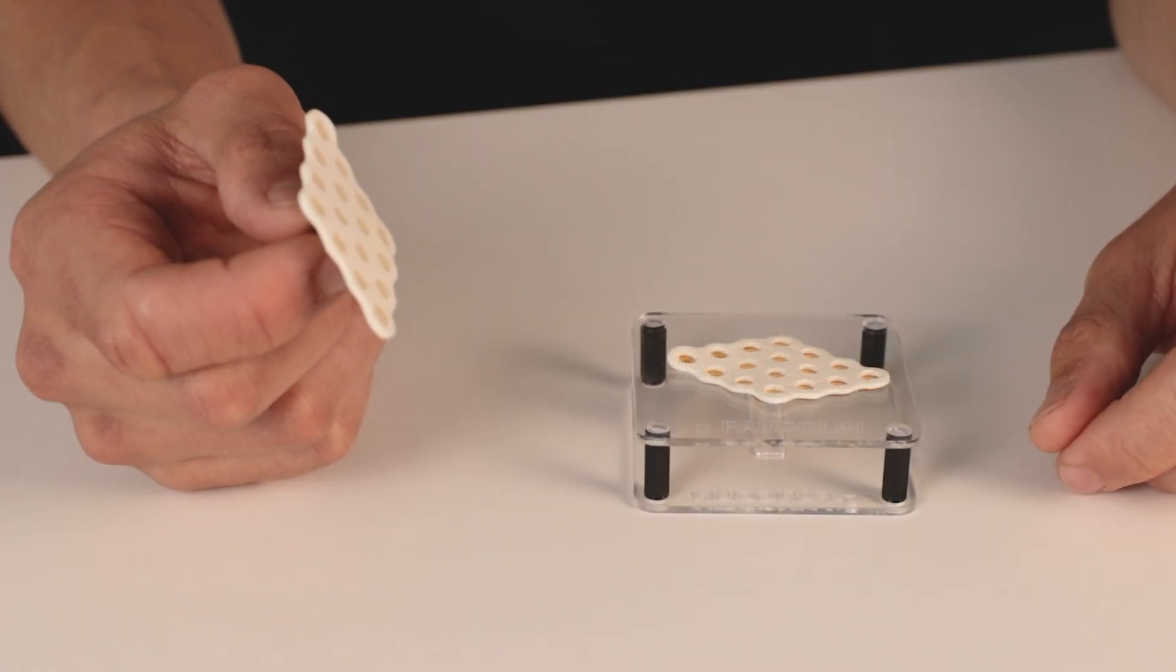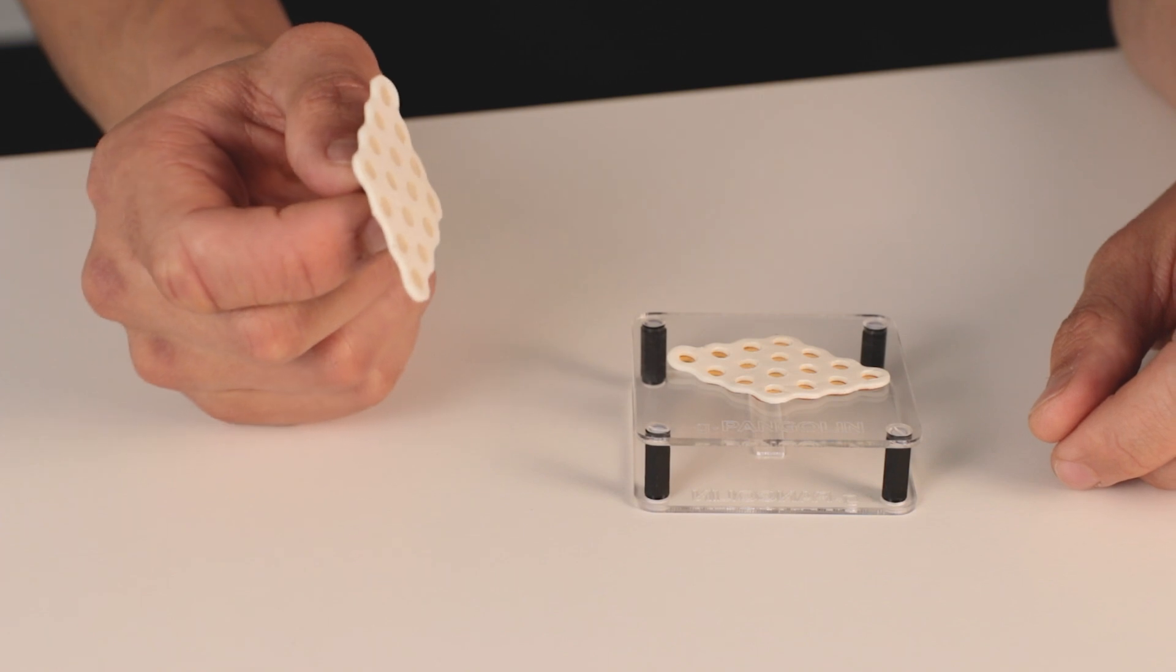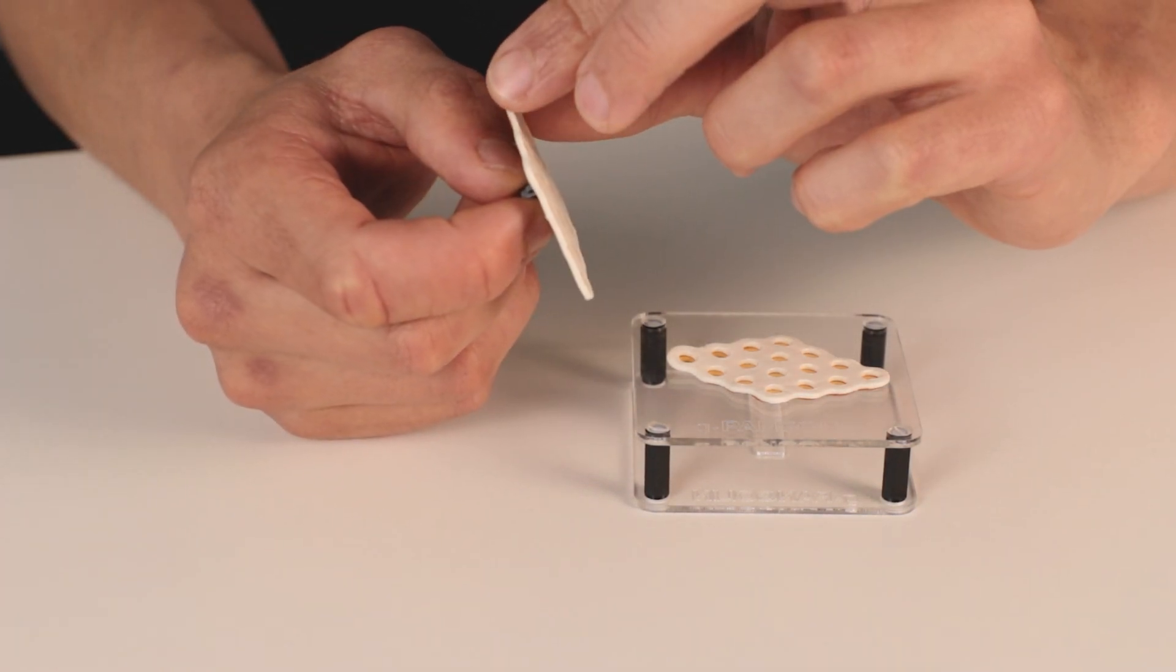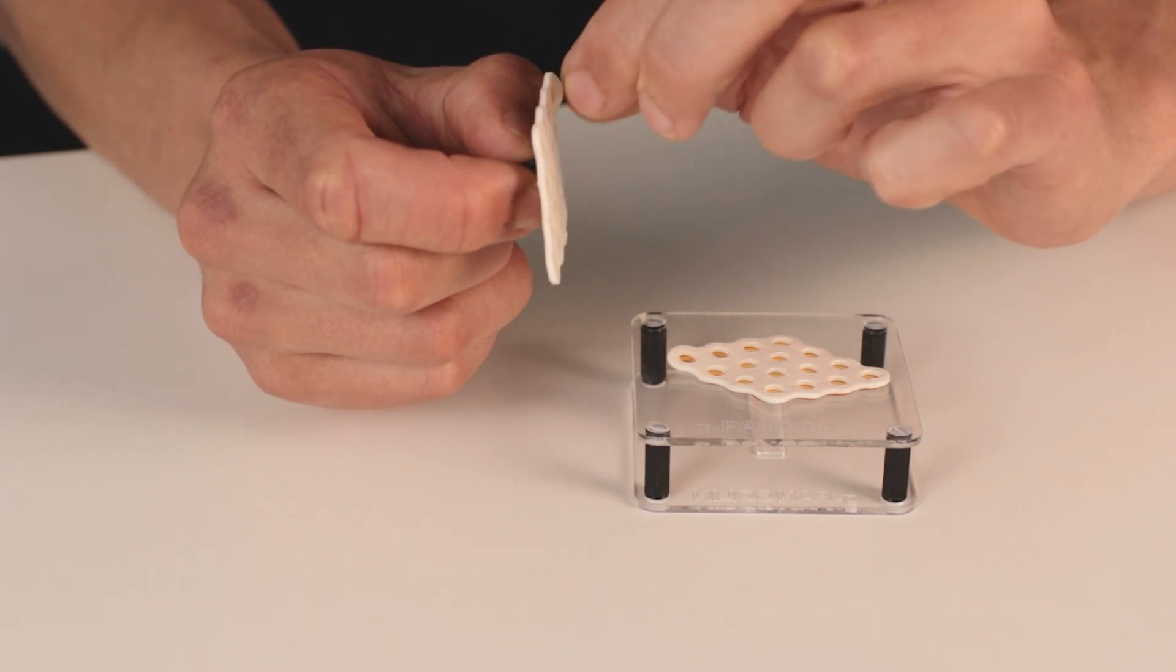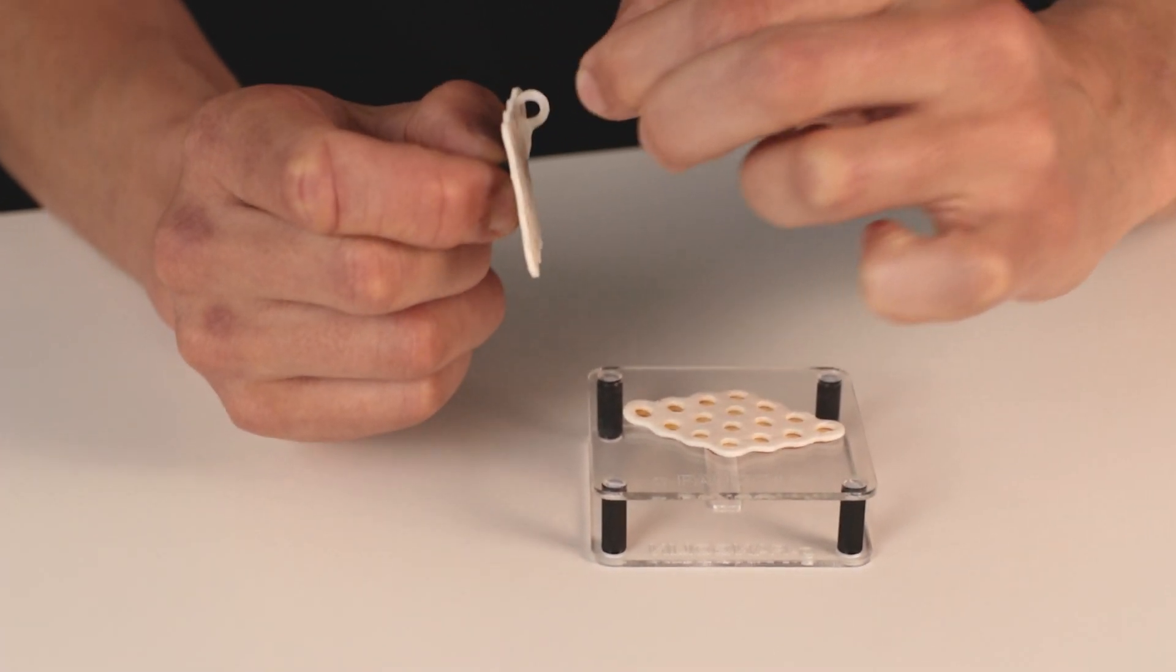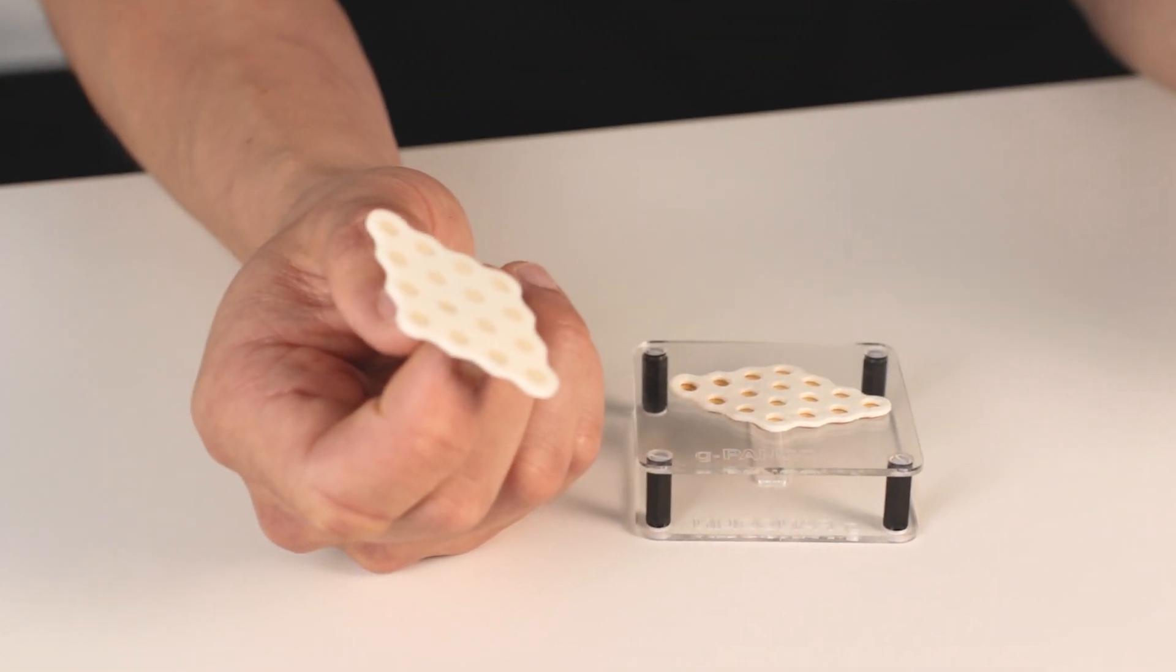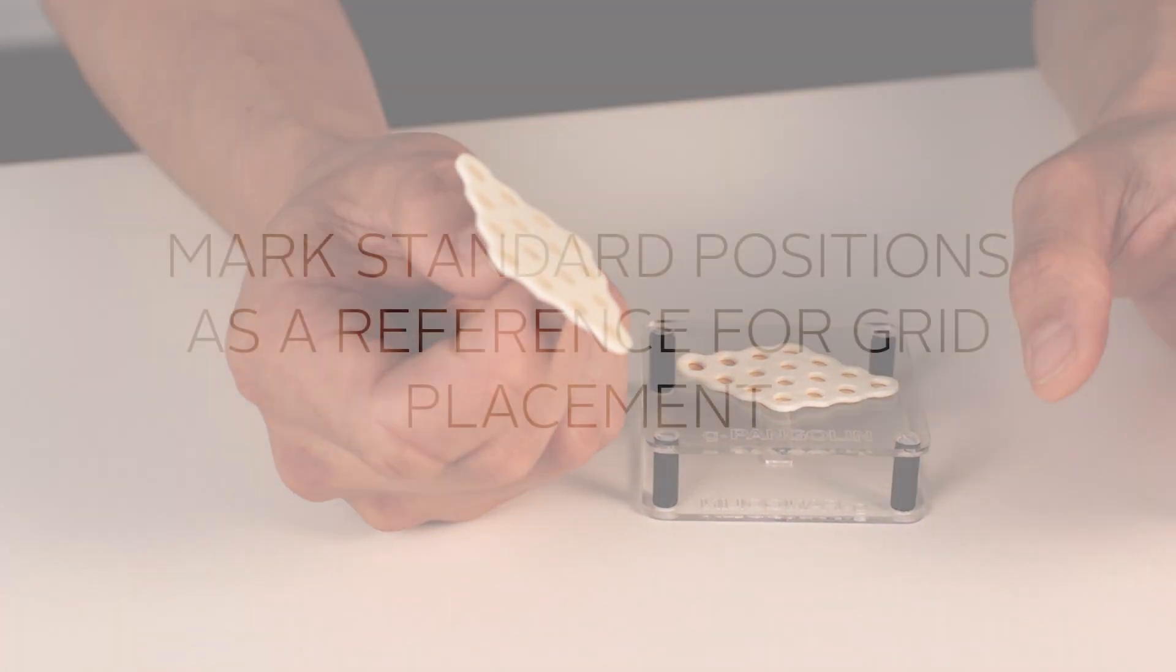As a last step before applying the grids to the scalp you have to remove the liner from the adhesive. Try to gently pick the liner from one corner and remove without touching the filled electrode dots. After removing the liner the grid is ready to be placed on the skin.